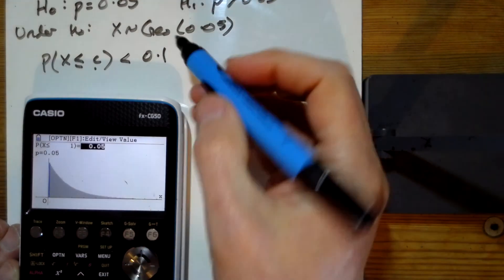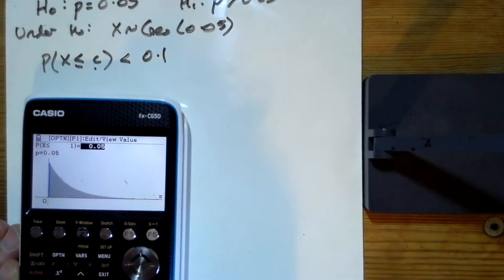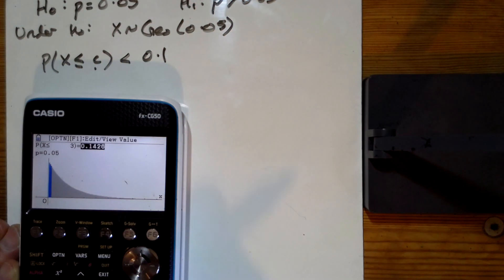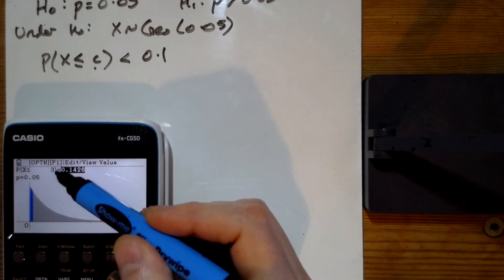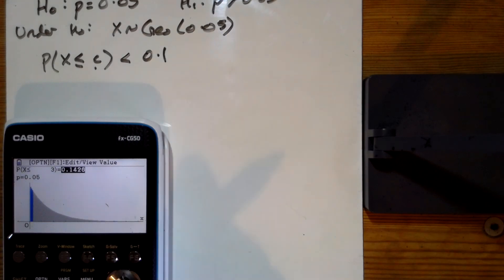And what probability do we want? We want this to be 0.1, don't we? So unfortunately, it's gone slightly too high to start with, as it always does. So the chance of being 3 or less is 14%. So let's take it down to 2 or less.